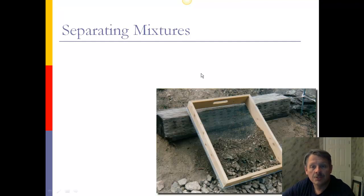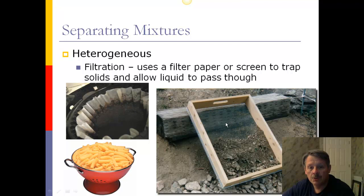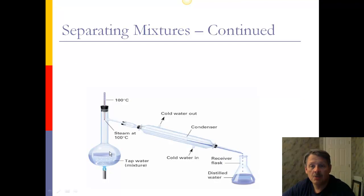A homogeneous mixture does not contain visibly different parts. So, sugar water, seawater, air is another good example. Gold rings, my wedding ring, is not pure gold. If it was, it would be too soft. So, they mix it with other metals. Homogeneous mixtures are often also called solutions. So, how can I separate mixtures? If I have a heterogeneous mixture, like this one where you can see rocks in it, you can see dirt, you can see gravel, you can separate it through a screen because they're different sizes.